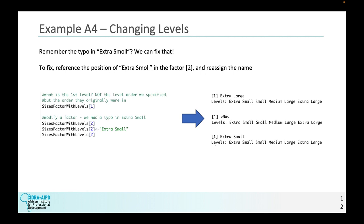Example A4, changing levels. So remember that typo that we saw in extra small? We can fix that. To fix it, we need to reference the position of extra small in the factor, which is position two, and reassign the name. So what is the first level in this sizes level with factors? It is extra large. If you remember when we assigned the vector, extra large was the first position. Therefore, in sizes factor with levels, it will still be the first position. Now we go down here into the second position where the typo was extra small. When you print extra small, you see NA because it is not applicable because there was not a valid level. We then reassign the sizes factor with level at the second index, extra small with an A. And then we print it. And what do we see? Extra small. So now there is a valid level. Therefore, it is a valid observation.